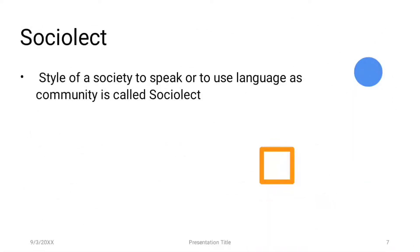Then sociolect. The style of a society to speak or to use language as a community is called sociolect. Sociolects are spoken by the members of a particular group or particular society. You can also say sociolect is the name for change in the same language across various societies or communities — language spoken differently in different groups.